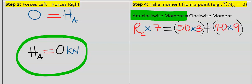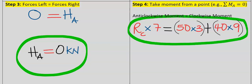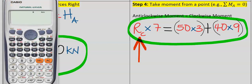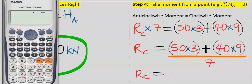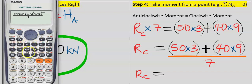The next step is to solve for the reaction at C. Using the calculator: (50 × 3 + 40 × 9) divided by 7. Pressing the equal sign and converting to decimal, we get 72.86 kilonewton.